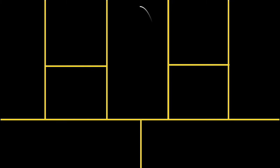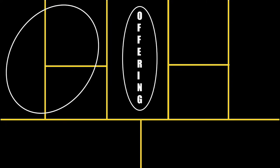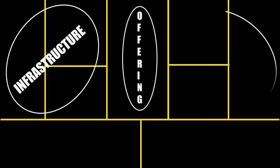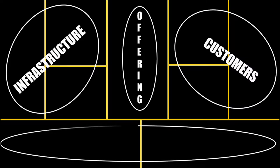You can group some of these building blocks together, and the canvas is designed accordingly. There is the offering section, the infrastructure section, the customers section, and the last section is about finances — everything related to money.